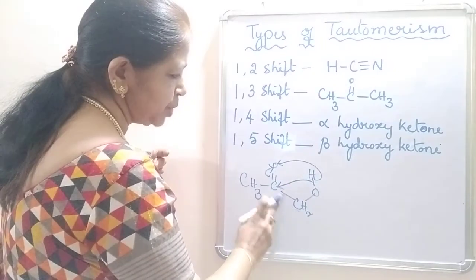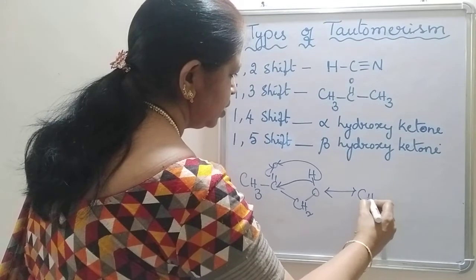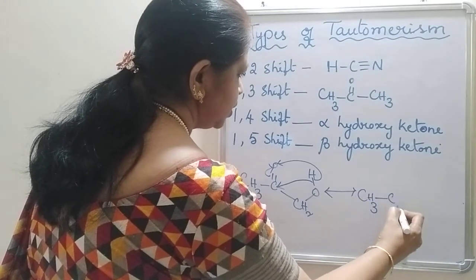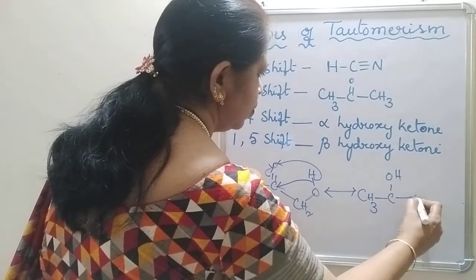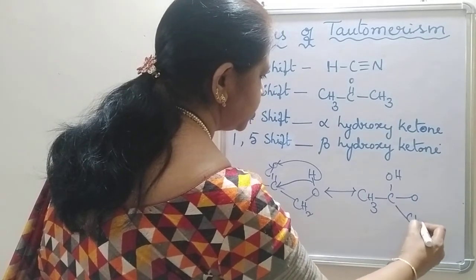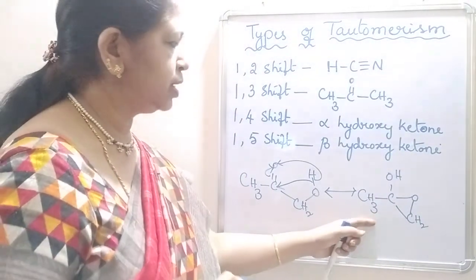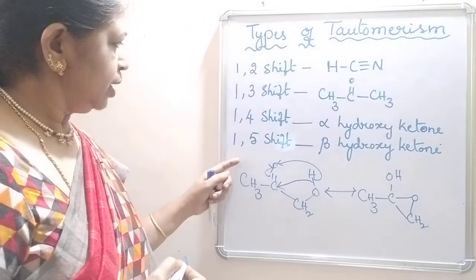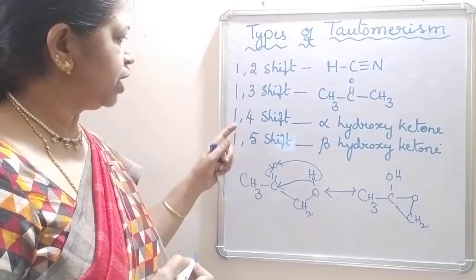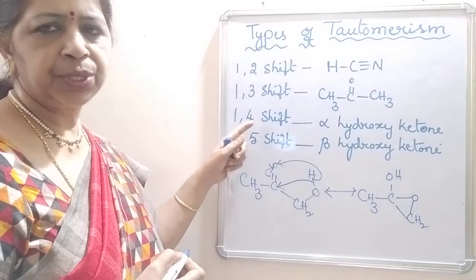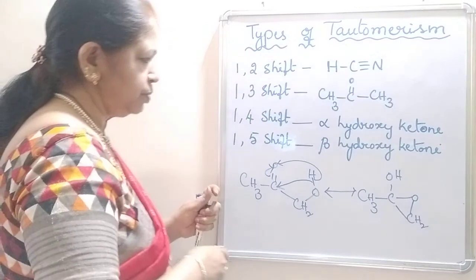So which results in the formation of a cyclic ether. It is a cyclic ether, C-OH-O-CH2. This is the cyclic ether resulting from alpha hydroxy ketone by 1-4 shift, 1-4 shift of proton. Now, let us see 1-5 shift.